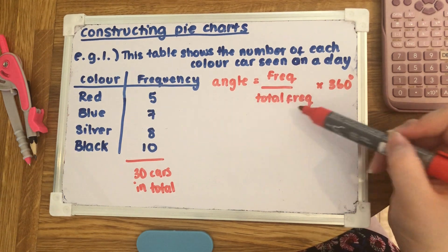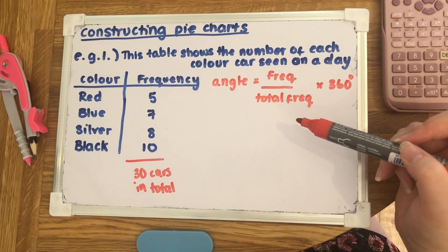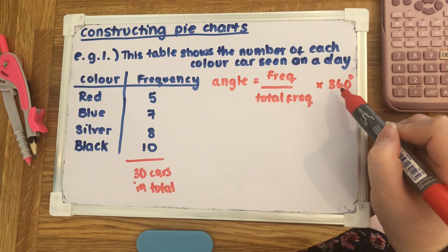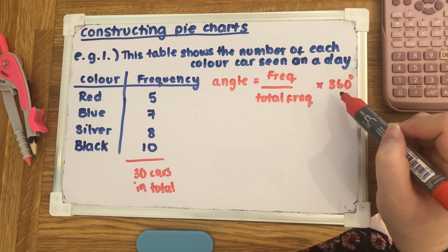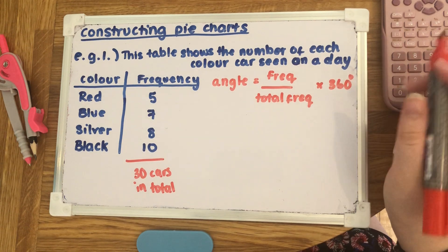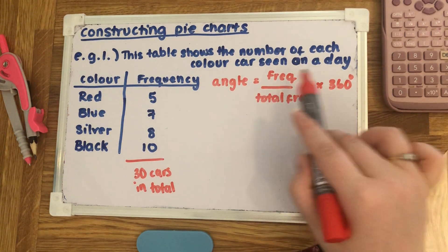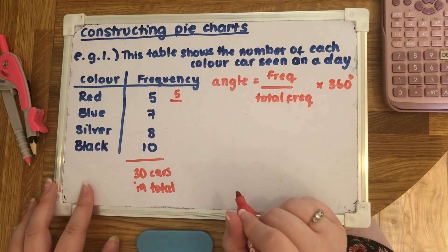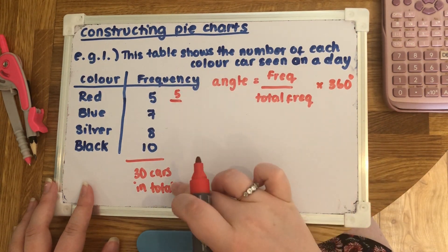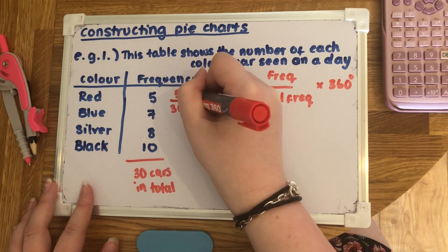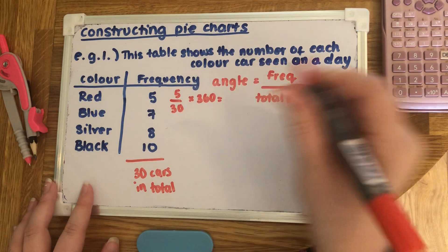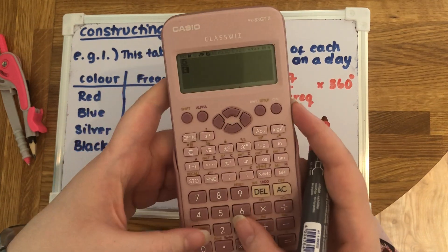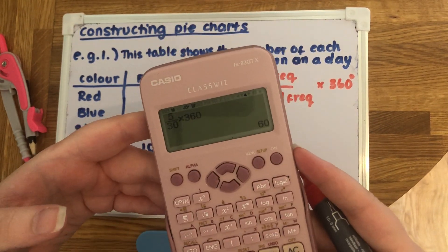That's going to be 30 for this particular question. We multiply that by 360. The reason why is because in a circle there are 360 degrees. For each one I'm going to show how I use this formula to work out the number of degrees. We're going to start with the red one, so we do five because that's how many cars were red, divided by the total frequency which was 30, and then we times that answer by 360. Five divided by 30 multiplied by 360 gives us 60 degrees.